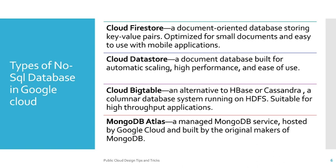Cloud Datastore is a document database built for automatic scaling, high performance, and ease of use. Cloud Bigtable is an alternative to HBase or Cassandra — a columnar database system running on HDFS. So if you want to replace your HBase or Cassandra, you can try out Cloud Bigtable. It is suitable for high-throughput applications.